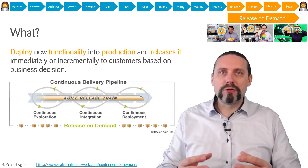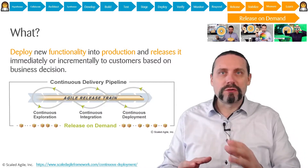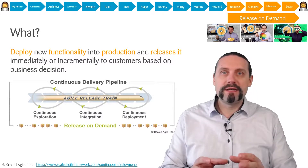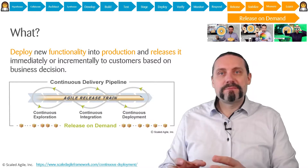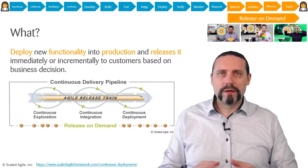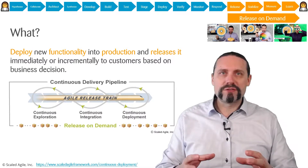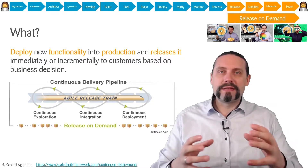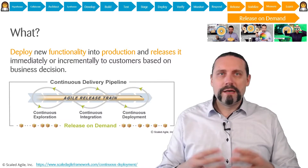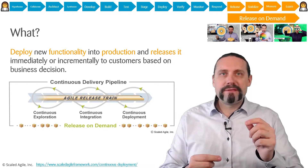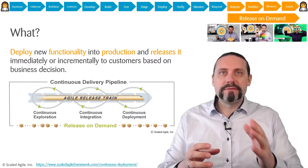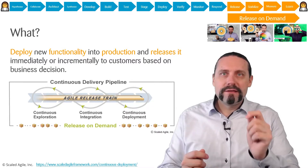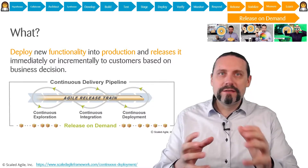We now continuously deploy our changes with the feature toggle off into production. After successful deployment we verify if everything is okay in production, taking a subset of tests we've already executed. We then continuously monitor our production server and build up alerting so we can respond to things that happen in production. This brings us to Release on Demand — we have continuously deployed new functionality with the feature toggle off into the production system, and now it's up to the business to decide when the time is right to release the new functionality to users.